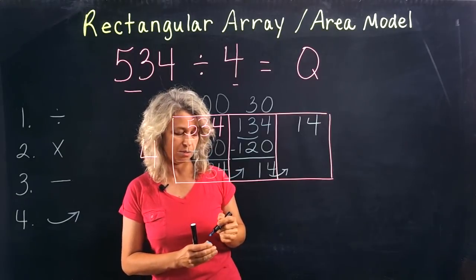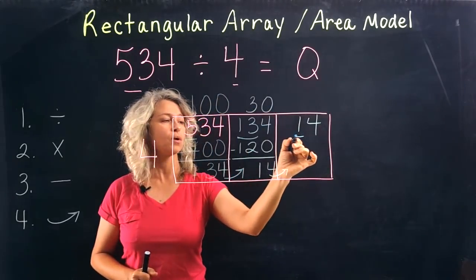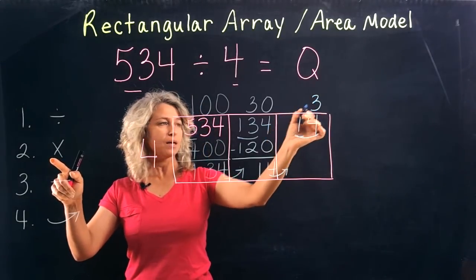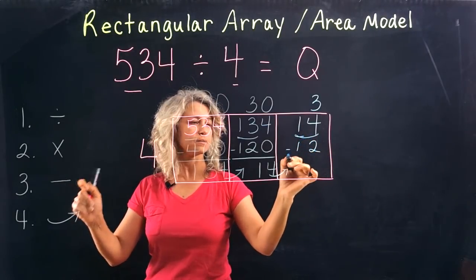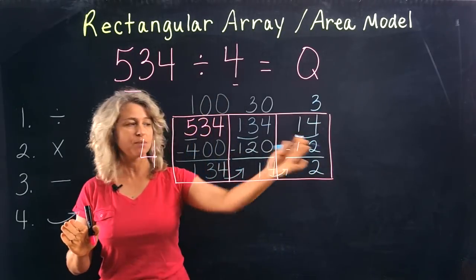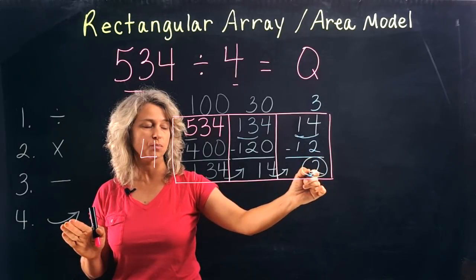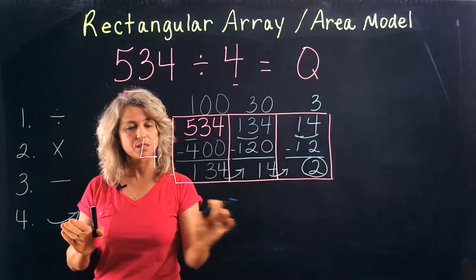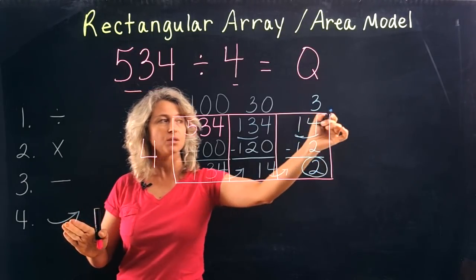Step four: bring it over to the next box. We're repeating right back to the beginning again. Can 4 go into 1? No. But 4 can go into 14 three times. Multiply: 3 times 4 is 12. Subtract: 4 minus 2 is 2. Now we're out of boxes, and you'll notice we're ending here with a 2.